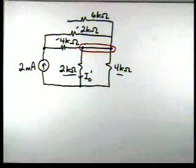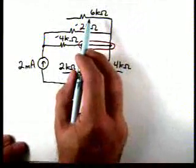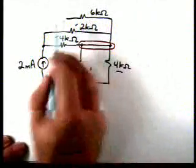So let's redraw the circuit, showing that this 6-kilohm at the top is really out of the problem just because it's in series of that